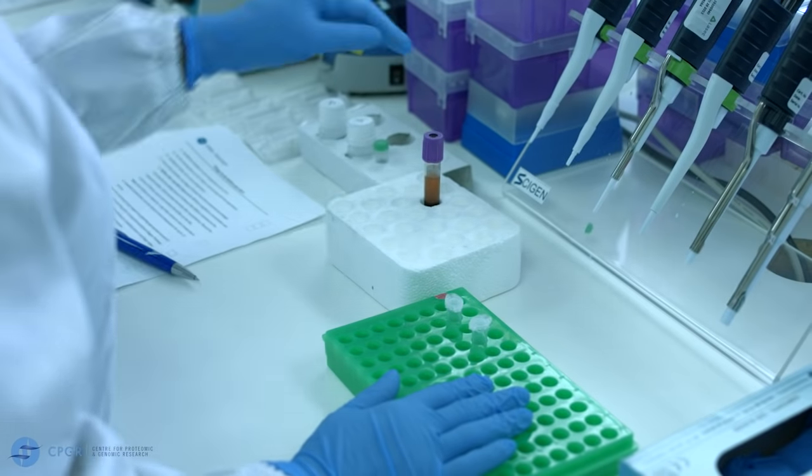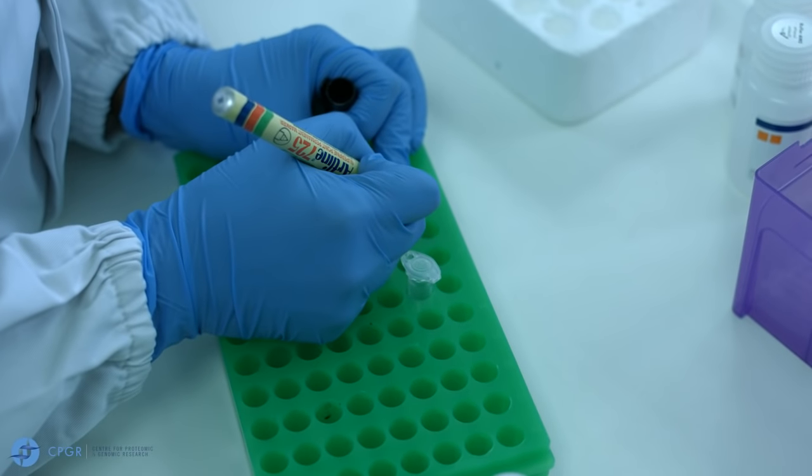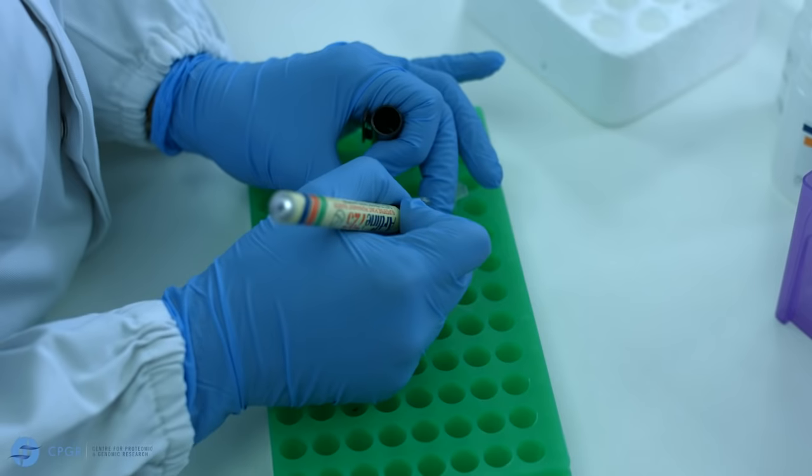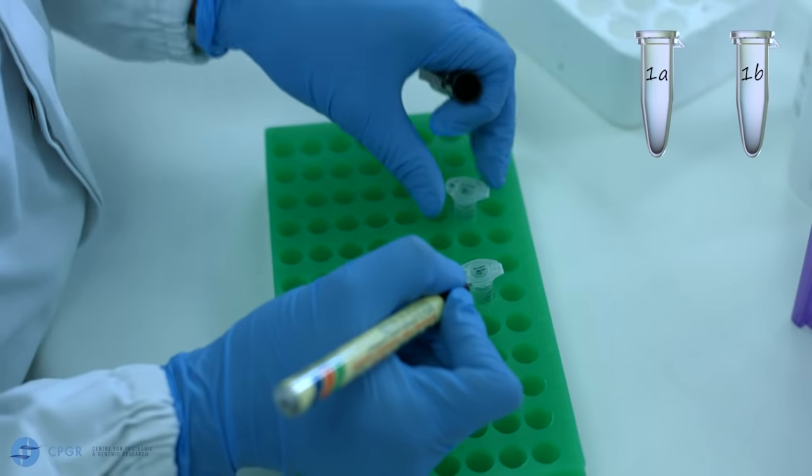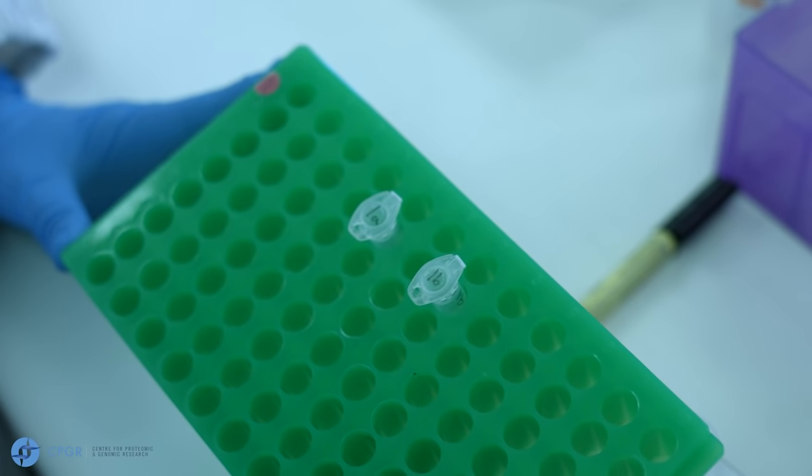So you have prepared the area where you will be carrying out your extractions and you will begin by labeling the microtubes with sample IDs using a permanent marker. We label the sides of our tubes as well in case ethanol comes into contact with the microtube lids.